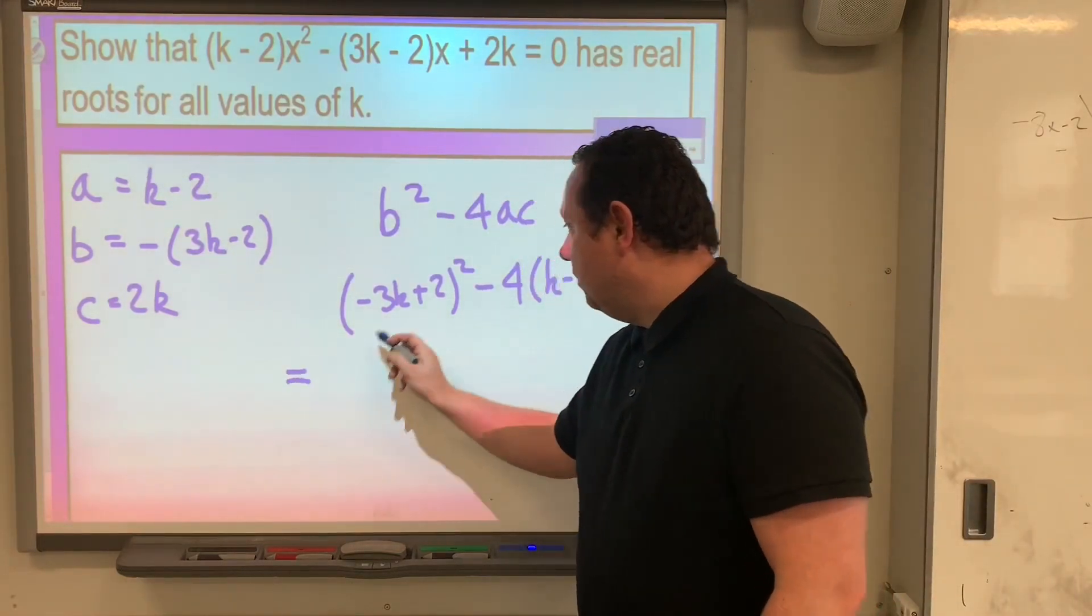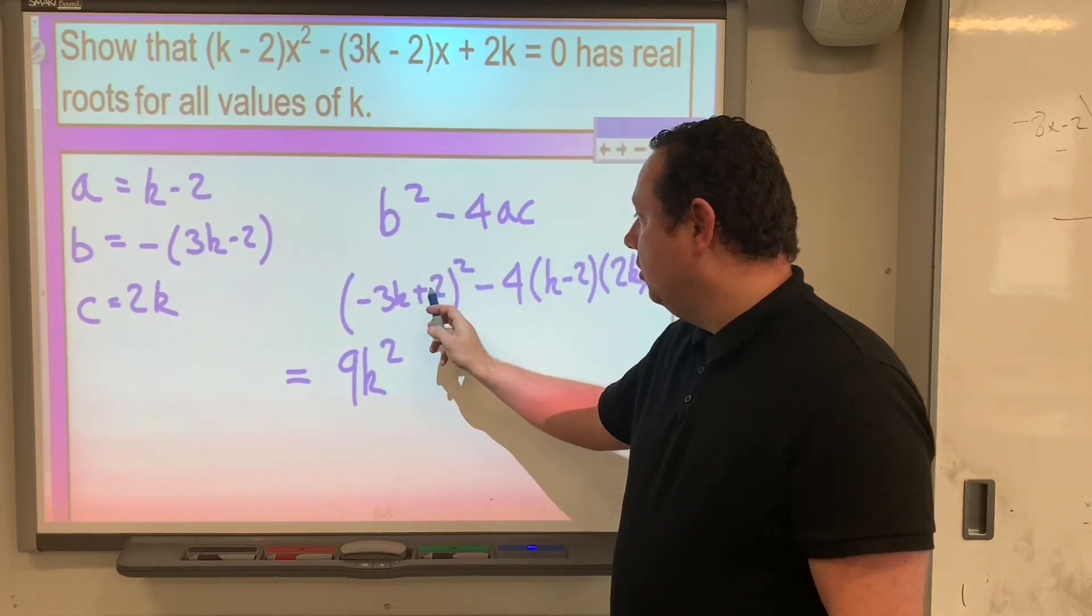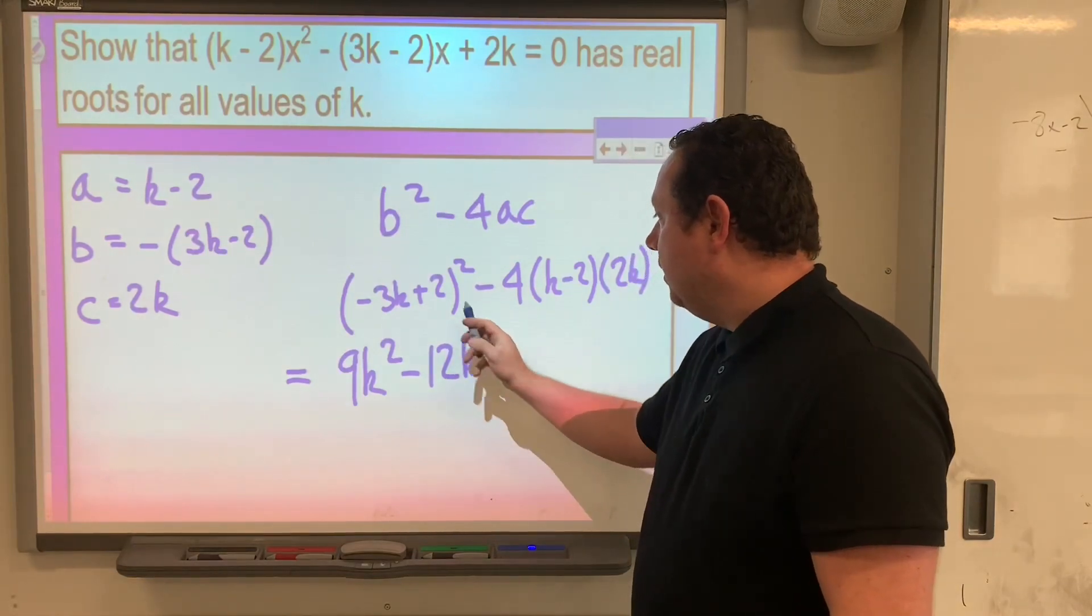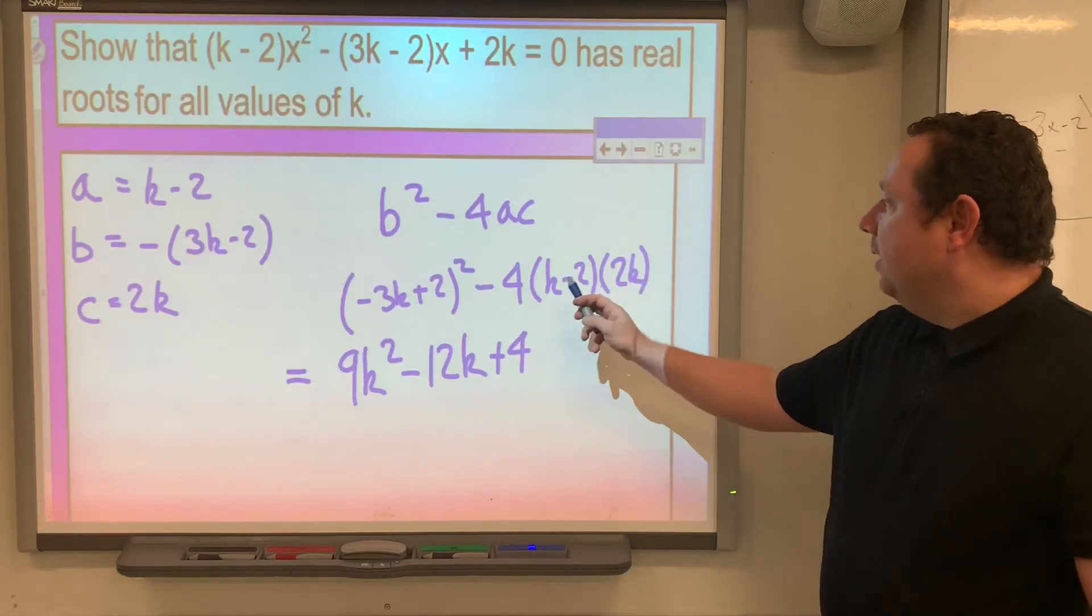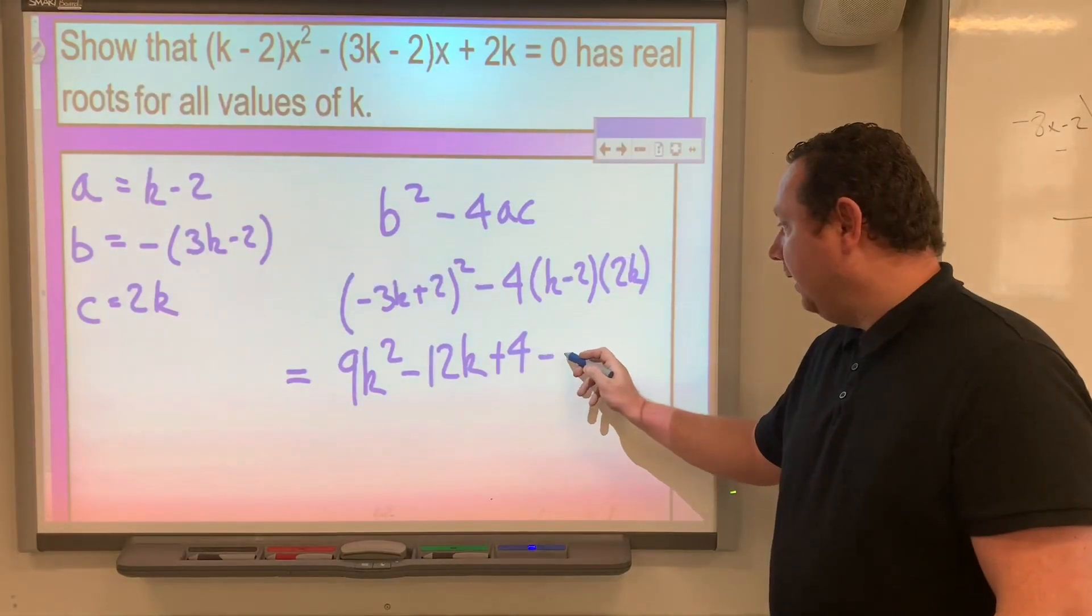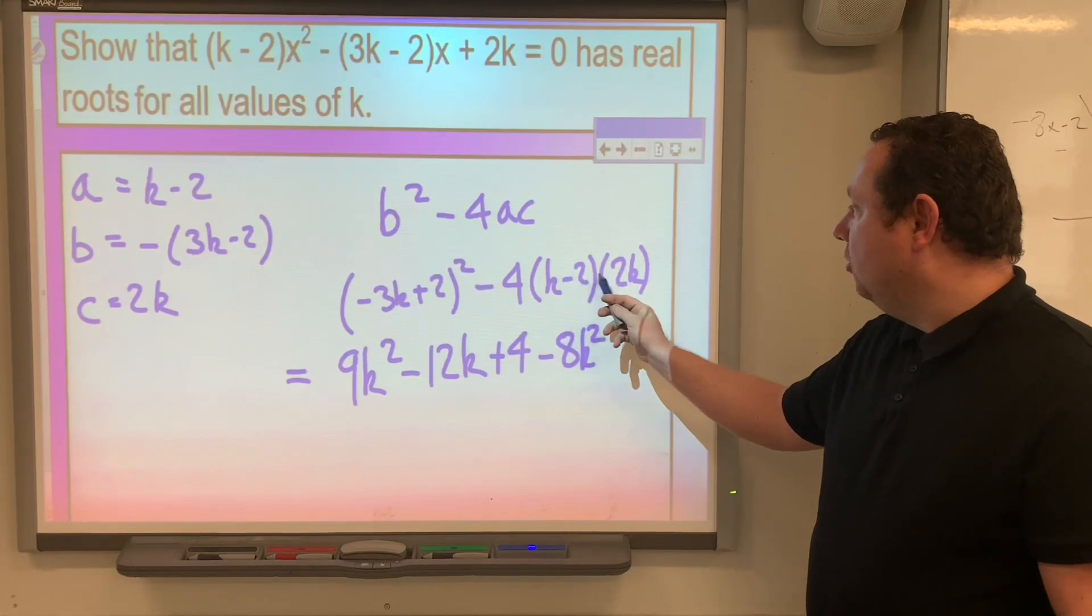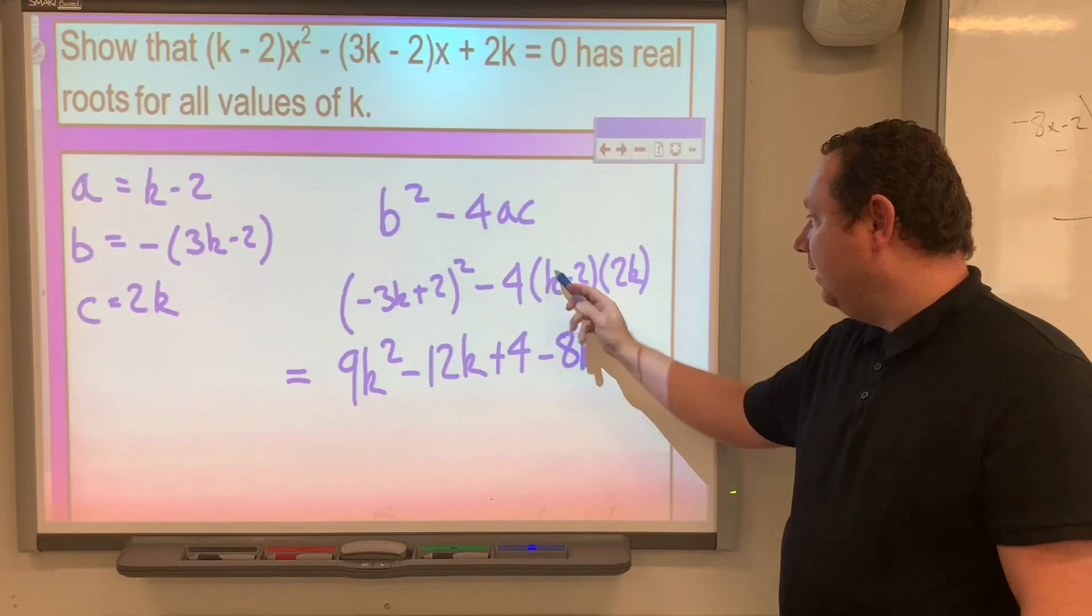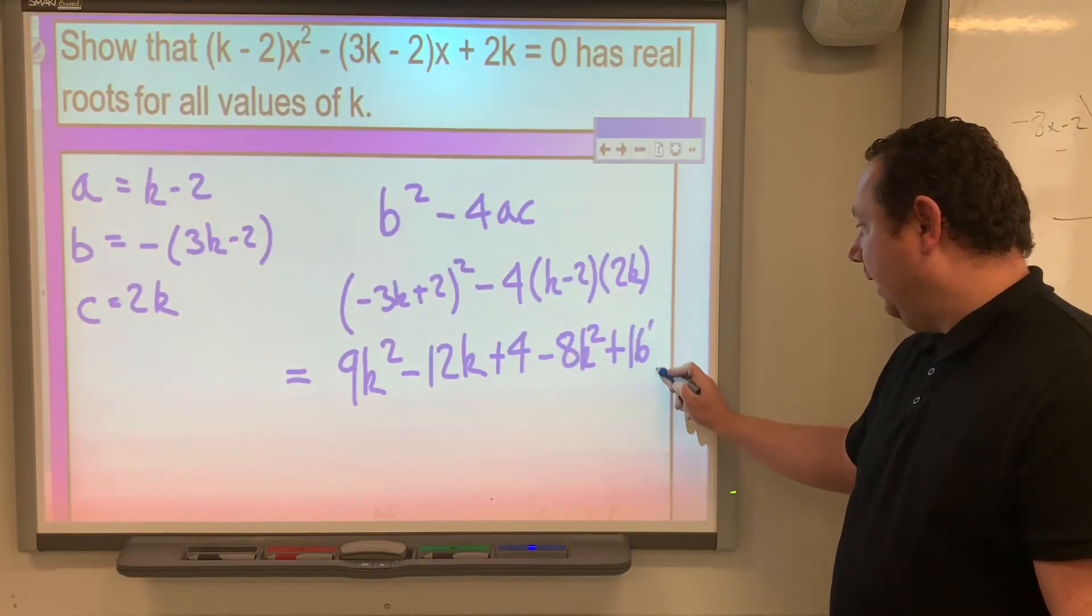Multiplying that out, minus 3 times minus 3 is 9k squared. 2 times 3 is 6 doubled is 12, so minus 12k. 2 times 2 is 4. Multiplying the first bracket out: k times 2k is 2k squared times 4 is minus 8k squared. 2 times 2 is 4k, 4 times 4 is 16, that'll be a plus, plus of a minus times a minus, plus 16k.